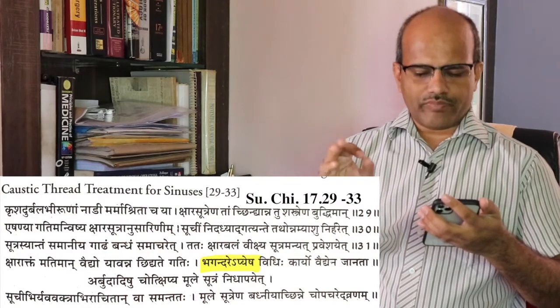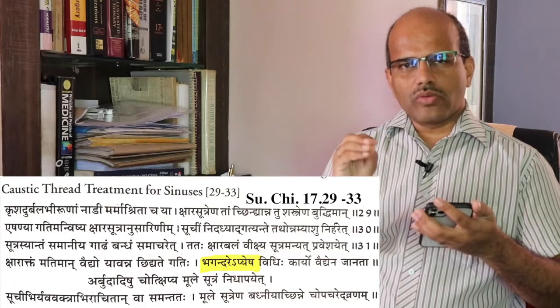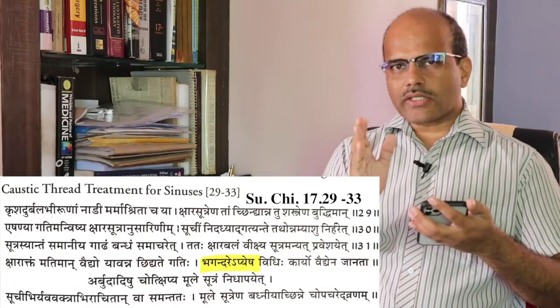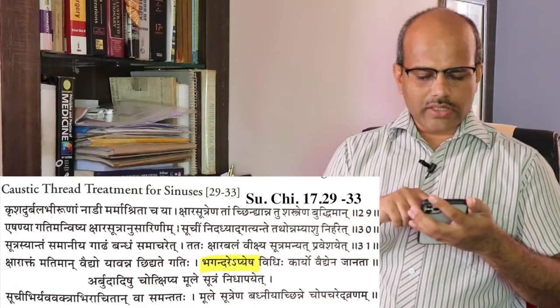Sushruta is a person who wrote Sushruta Samhita about 5000 years back. In his text we get a reference of using Kshara Sutra. He says: 'Krusha Durbala Biruna Nadi Marma Shrita Chaya Kshara Sutraena Tam Chindya Tu Shastraena Buddhiman' — meaning a person who is not fit for surgery, who is emaciated and of less strength, is one indication. Another indication is when the fistula is situated in a vital part where surgery is contraindicated.